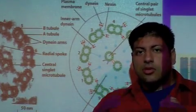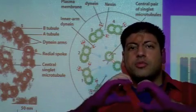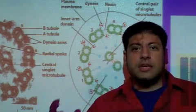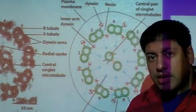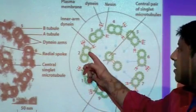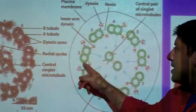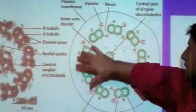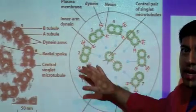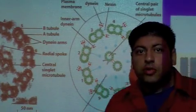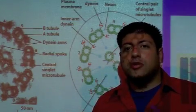One has 13 and one has 10. Thirteen plus 10, that's a doublet. So the A subunit has the 13 and the B subunit has 10. These doublets on the outside ring here, this axoneme structure, are going to be playing the major role here.